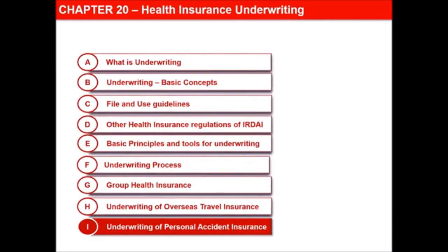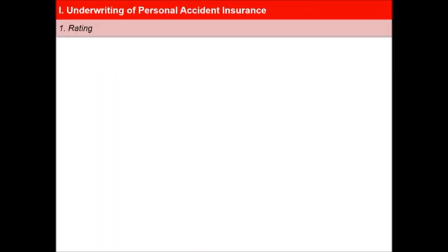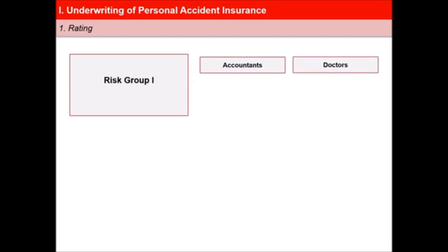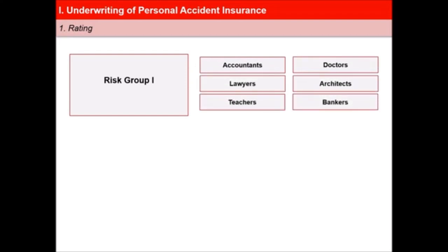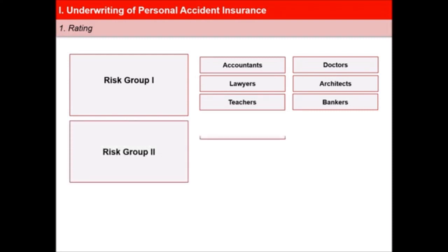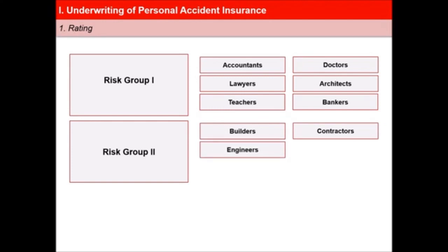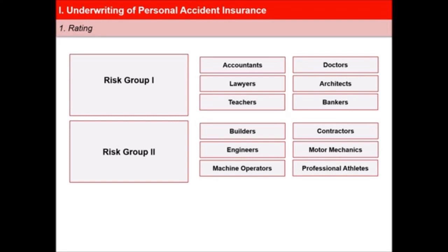In this next video of the lesson, Health Insurance Underwriting, we will learn about underwriting of personal accident insurance. In personal accident insurance, the main factor is the occupation of the insured. Generally, occupations are classified into groups where each group reflects more or less similar risk exposure. They are generally classified into three groups. Risk group 1: accountants, doctors, lawyers, architects, teachers, bankers, persons engaged in administrative functions or in occupations of similar hazards. Risk group 2: builders, contractors and engineers engaged in superintending functions, and in manual labor like motor mechanics, machine operators, professional athletes, sportsmen and persons engaged in occupations of similar hazards.